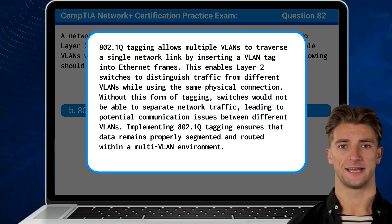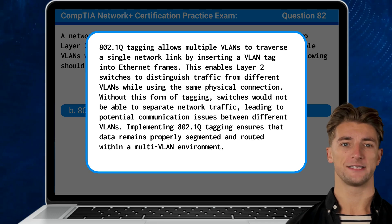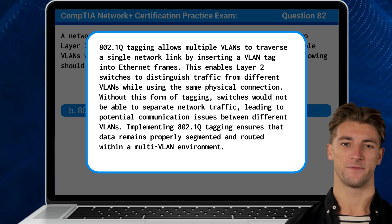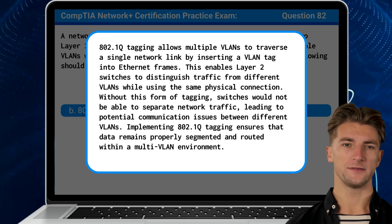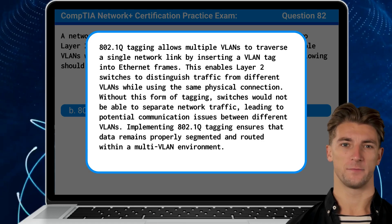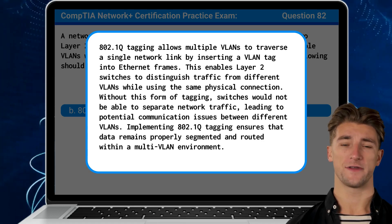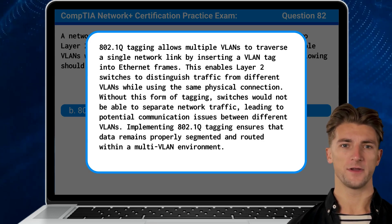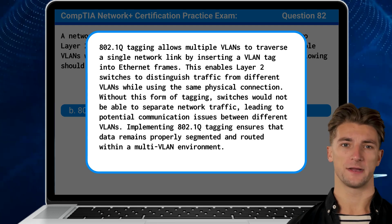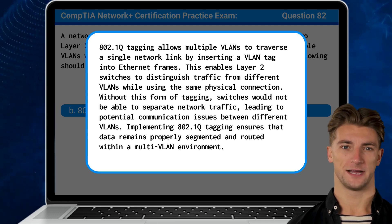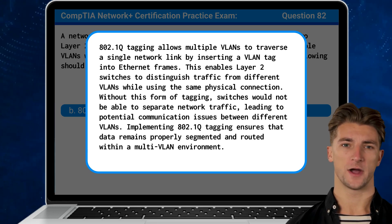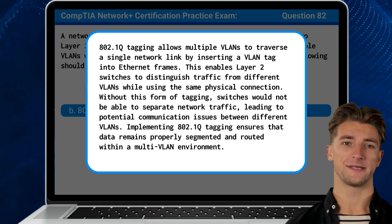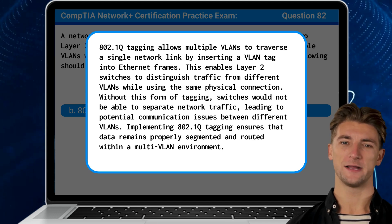802.1Q tagging allows multiple VLANs to traverse a single network link by inserting a VLAN tag into Ethernet frames. This enables Layer 2 switches to distinguish traffic from different VLANs while using the same physical connection. Without this form of tagging, switches would not be able to separate network traffic, leading to potential communication issues between different VLANs. Implementing 802.1Q tagging ensures that data remains properly segmented and routed within a multi-VLAN environment.